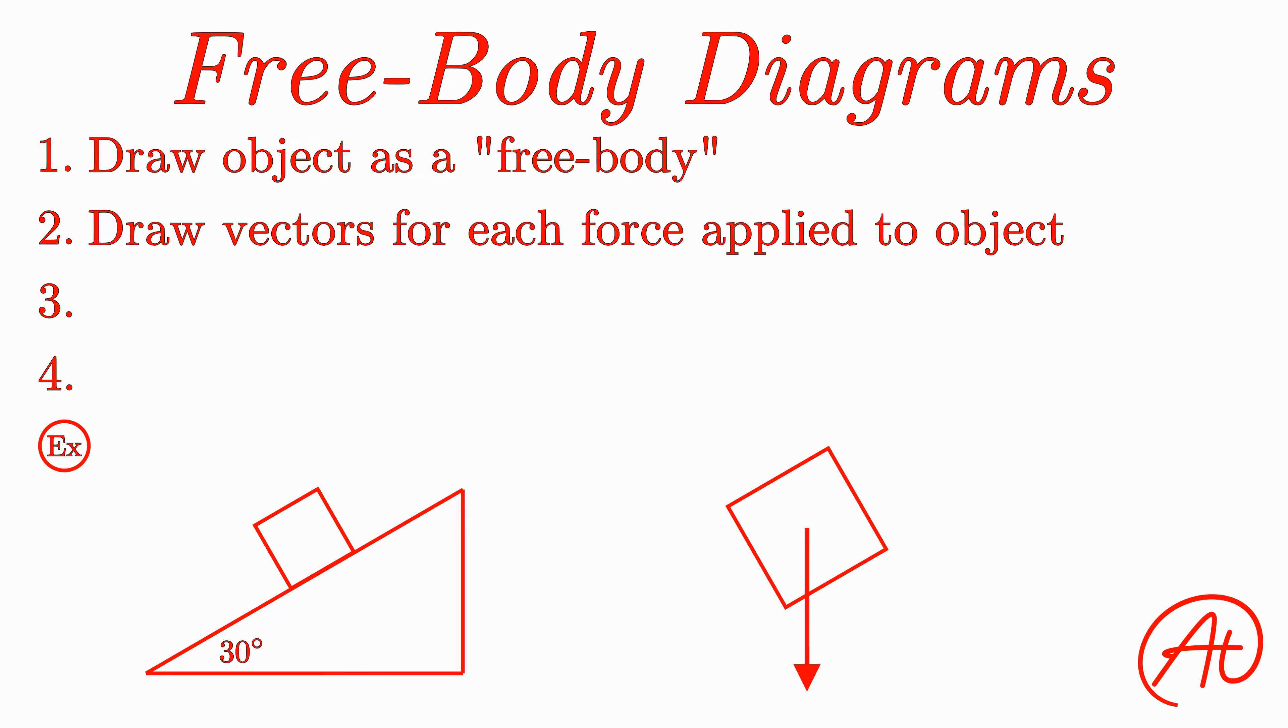Next, we have the normal force of the ramp pushing back up on the object in the direction perpendicular to the surface. And finally, we have the force of friction between the object and the ramp that is acting in the direction up the ramp and apparently keeping the object motionless on the ramp.